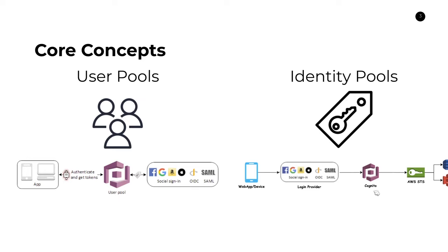What ties user pools and identity pools together is that you can have users registered in your user pool and tag them with certain profiles or attributes — maybe someone's an administrator and another person is a student. When the user is authenticated in the identity pool, you can read those attributes tagged to the user and decide which IAM role to assign. For example, a user tagged as administrator might get access to multiple services, while a user tagged as student gets more limited access. So you can assign an IAM role based on attributes that exist on the user in the user pool.